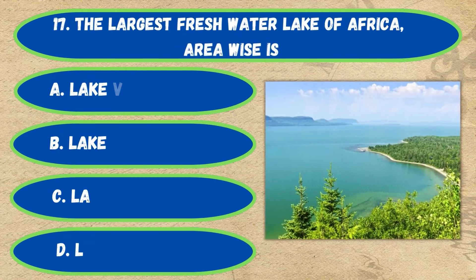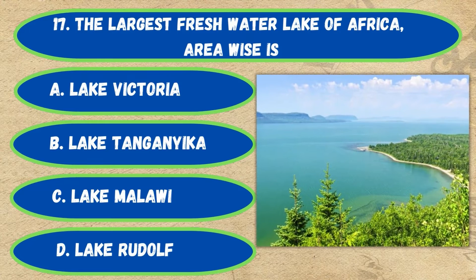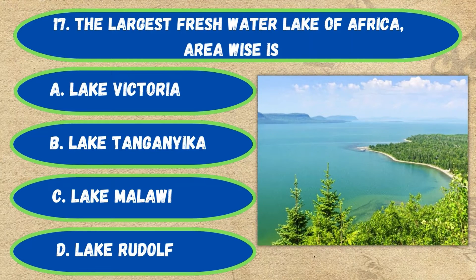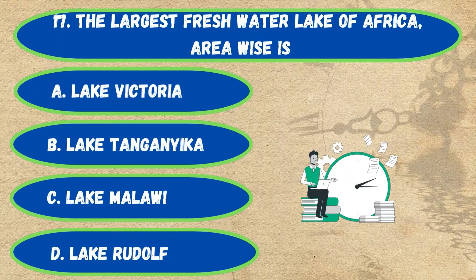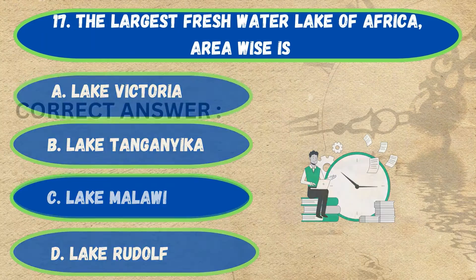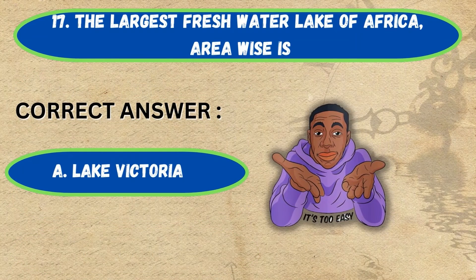Question number 17. The largest freshwater lake of Africa area-wise is: option A, Lake Victoria; B, Lake Tanganyika; C, Lake Malawi; D, Lake River. The correct answer is option A, Lake Victoria.